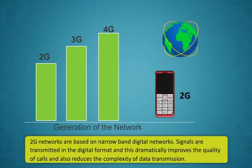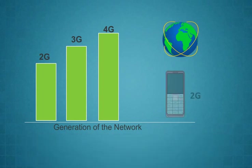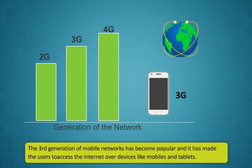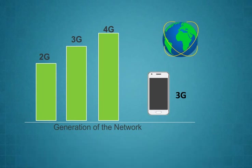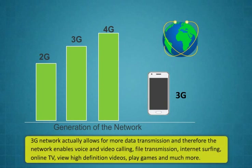2G networks are based on narrow band digital networks. Signals are transmitted in digital format and this dramatically improves the quality of calls and also reduces the complexity of data transmission. The third generation of mobile networks has become popular and it has made users able to access the internet over devices like mobiles and tablets. The speed of data transmission on a 3G network ranges between 384 kbps to 2 mbps. 3G network allows for more data transmission and therefore the network enables voice and video calling, file transmission, internet surfing, online TV, high definition videos, gaming and much more.